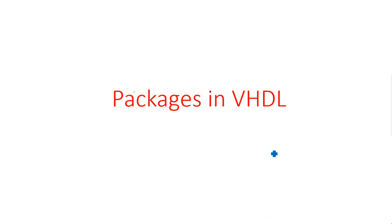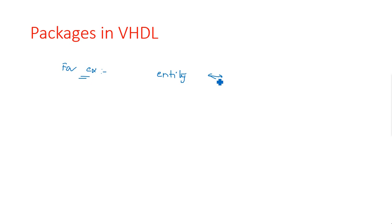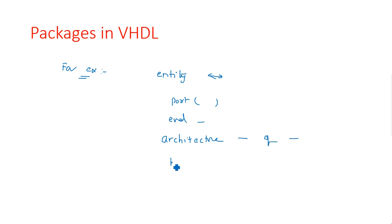In this video I am going to explain about packages in VHDL programming. Datatypes, constants, and subprograms can be declared inside entity declarations or inside the architecture declarations. These declarations are visible in the associated architecture bodies. The basic VHDL syntax starts with entity, followed by port definitions, then architecture with a begin and end block.